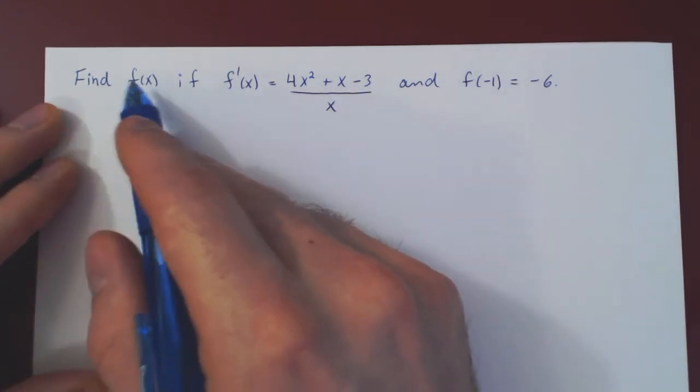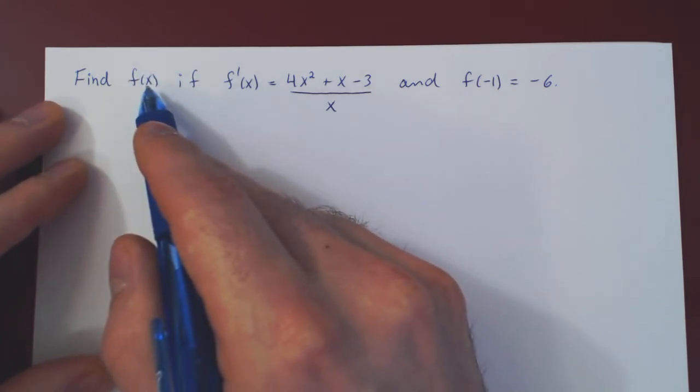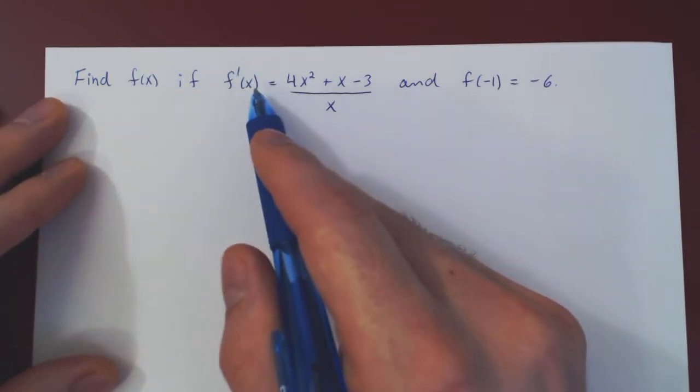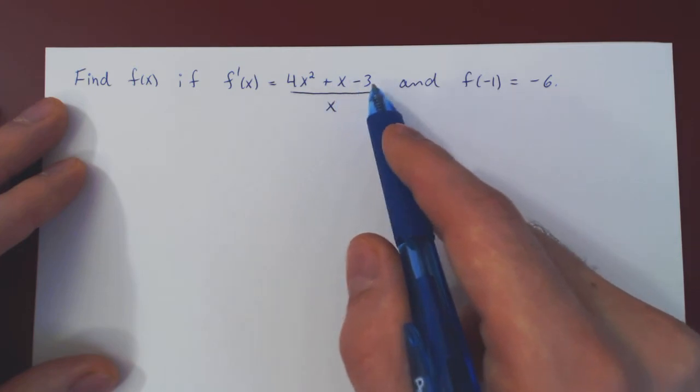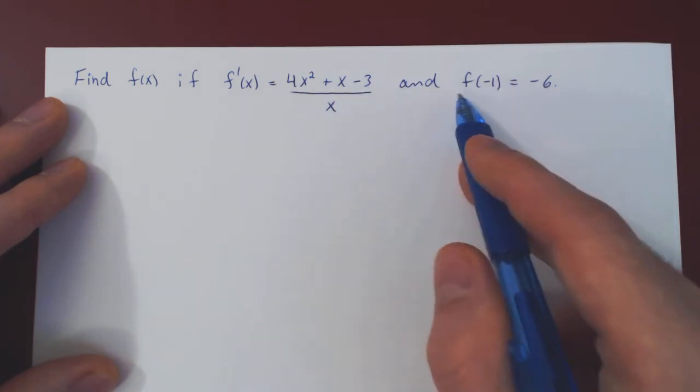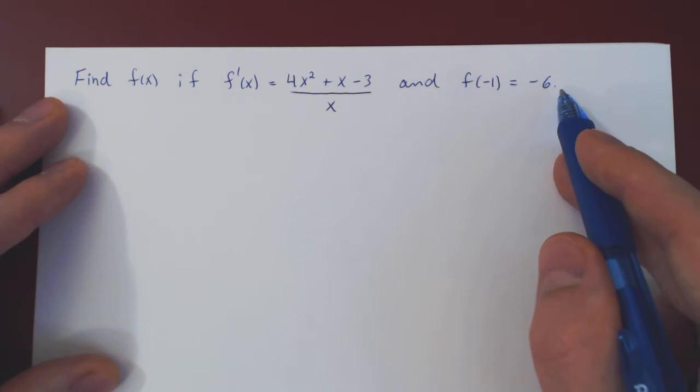Okay, so in this video, we want to find the function f(x) if we know its derivative is 4x² + x - 3 over x, and the value of f at -1 is -6.